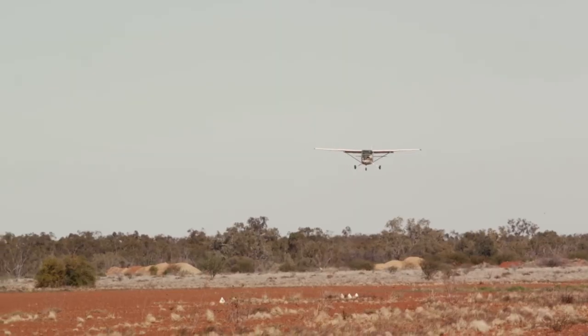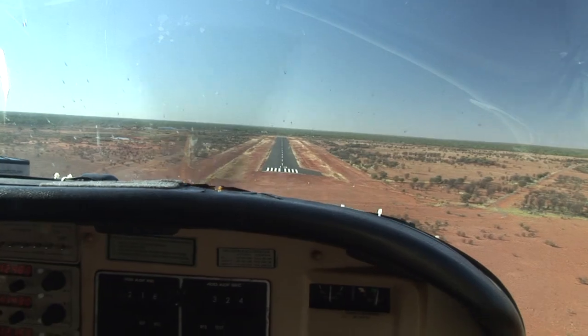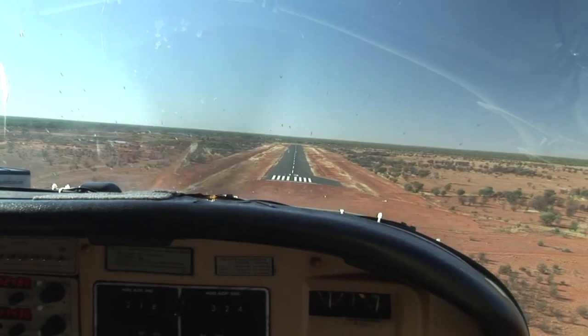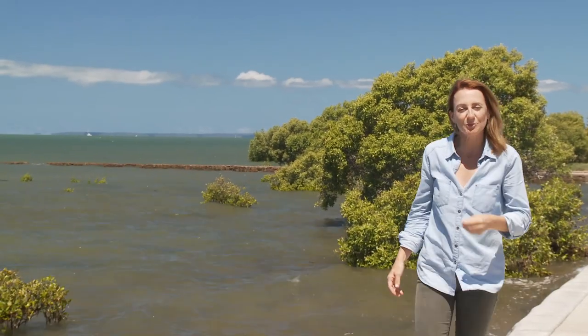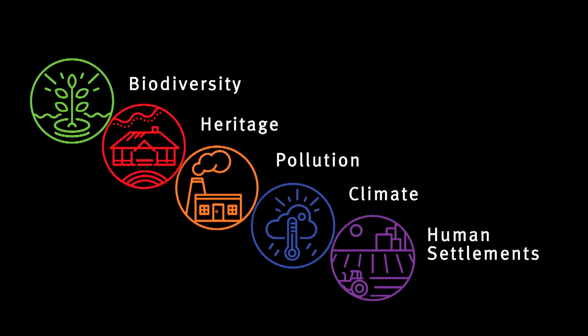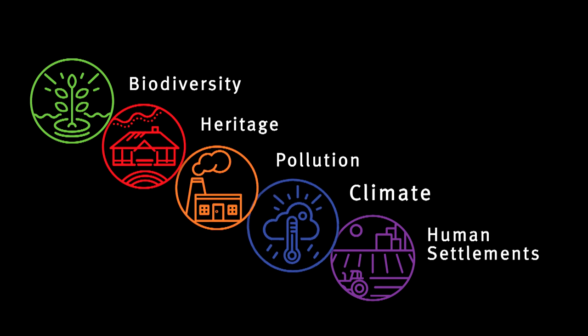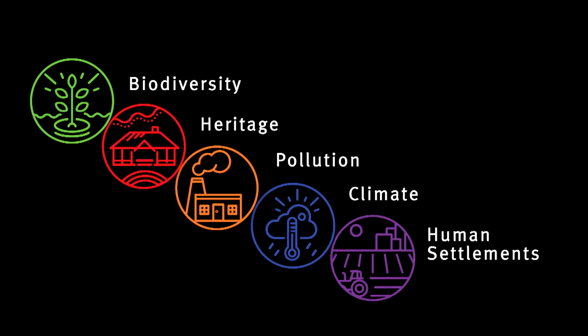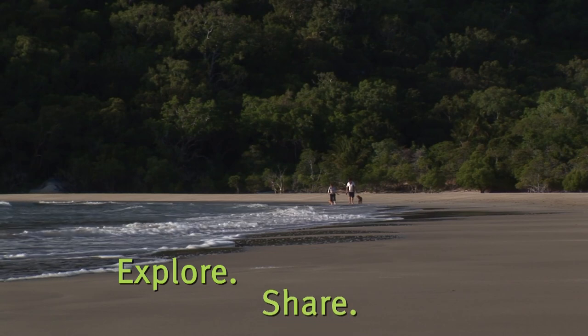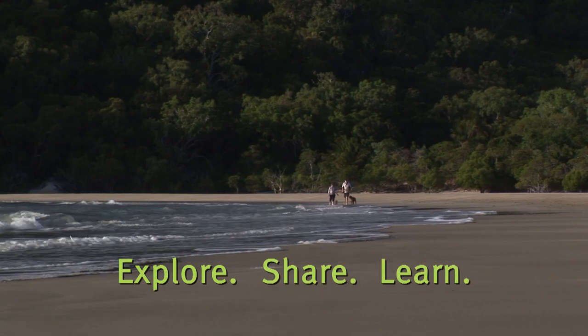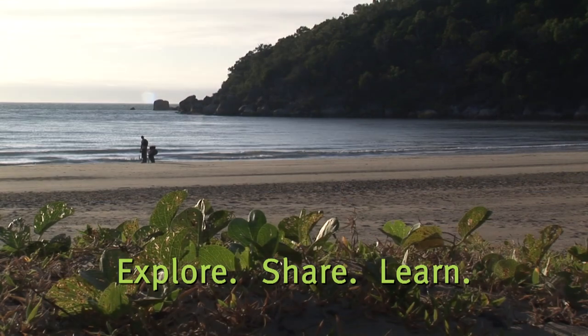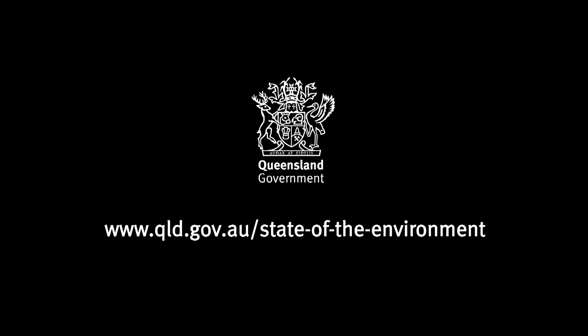The next update of this report will be released in 2020 and will include rural settlements. Information in the report will help the community, industry and government work towards improving environmental management and the sustainable use of our environmental assets. Queensland's web-based State of the Environment report has been compiled around five major themes. Explore. Share. Learn. Queensland's State of the Environment report is more than just a report – it's a resource.